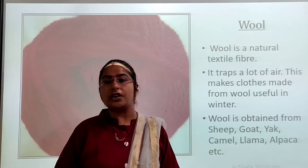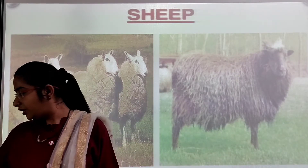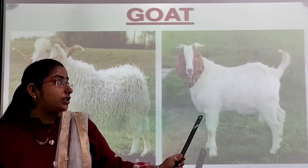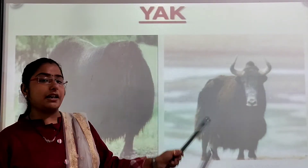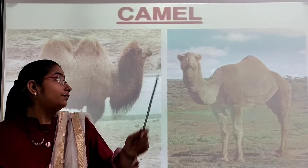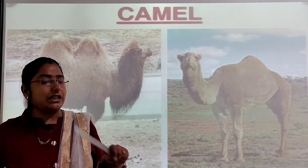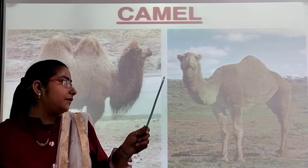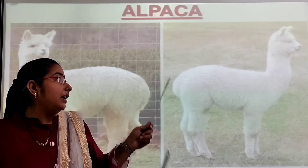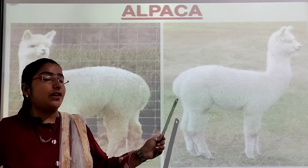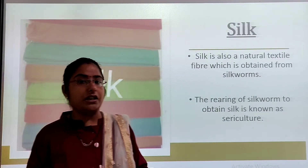These are the animals which give us wool. The sheep gives us wool. The goat also gives wool. The yak is an animal which gives us wool. Camel — some breeds of camel give us wool, not all camels. Then llama, which gives us wool. And alpaca, the last animal, also gives us wool. So these are the animals which give us wool.